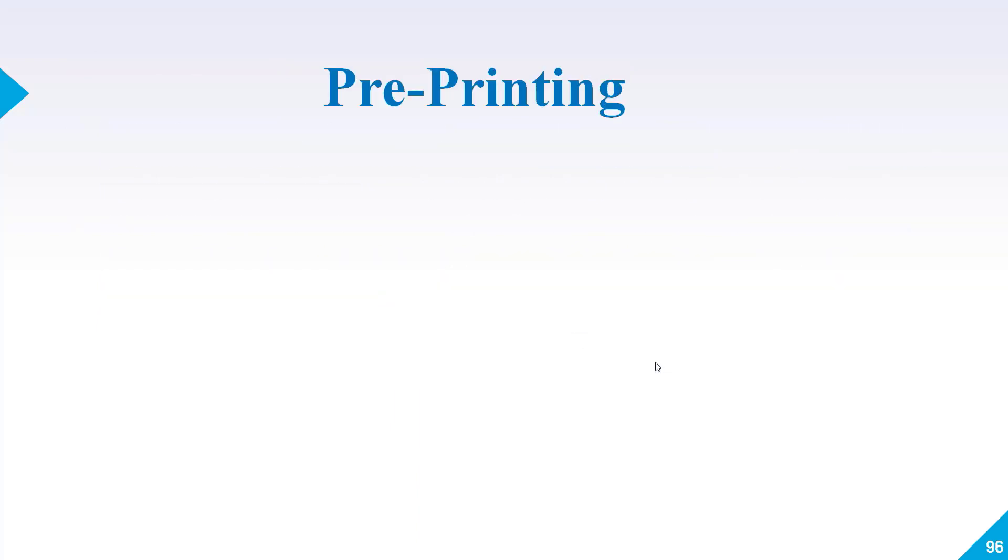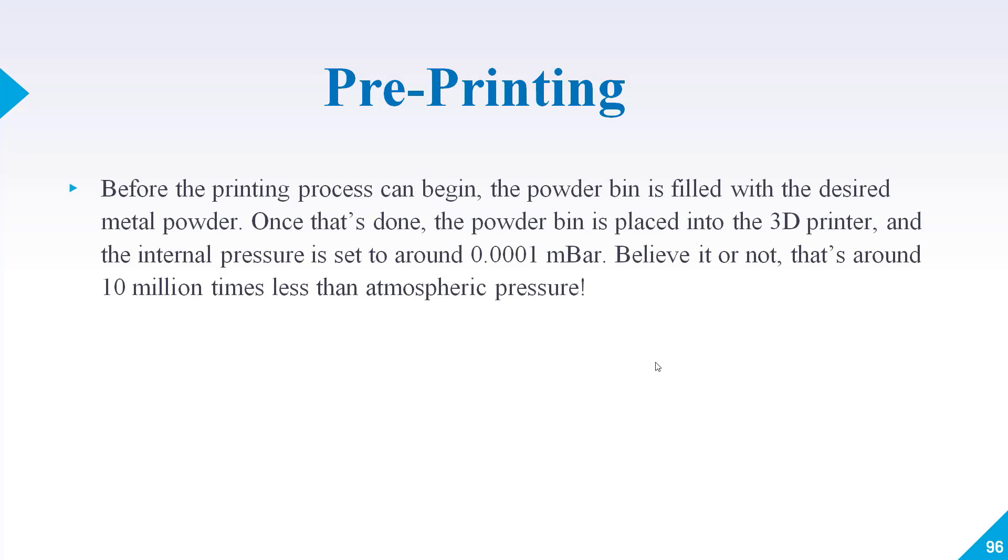Before starting our main event or 3D printing, let's talk about the requirements you need to ensure before starting your 3D printing. Before printing can start, the powder bin is filled with the desired metal powder. Whatever metal powder you need, you need to fill in the container. Once you feed your powder, the powder bin is placed into the 3D printer and the internal pressure is set to around 0.001 megabar.